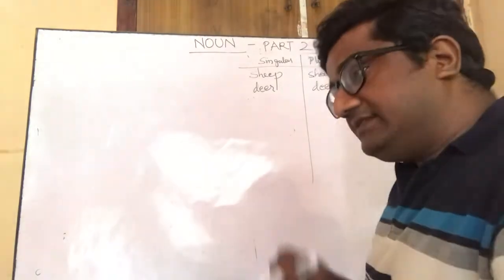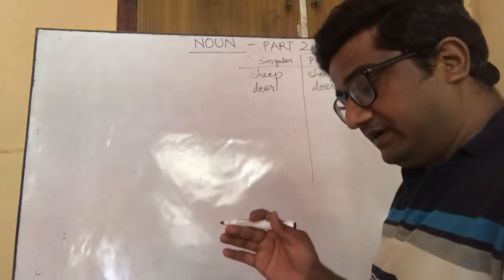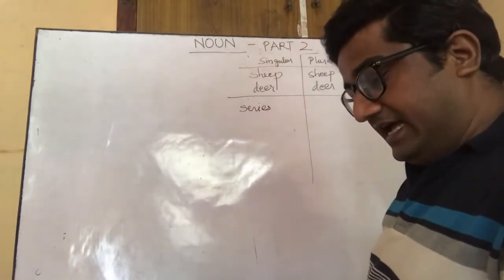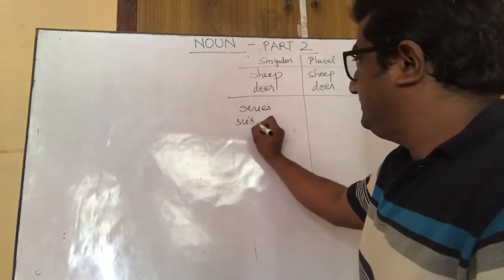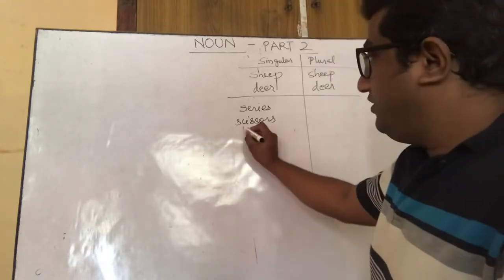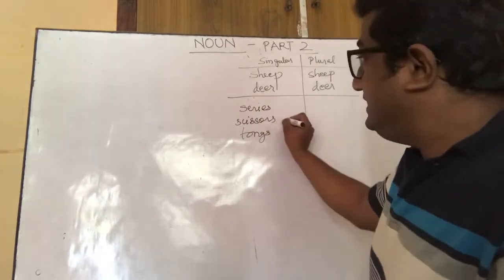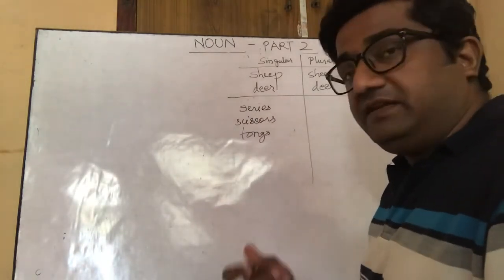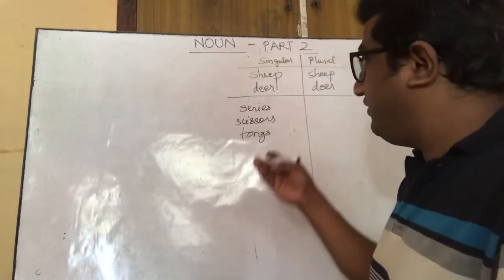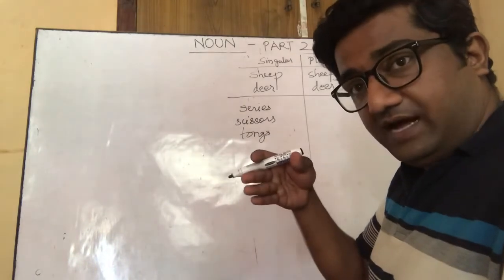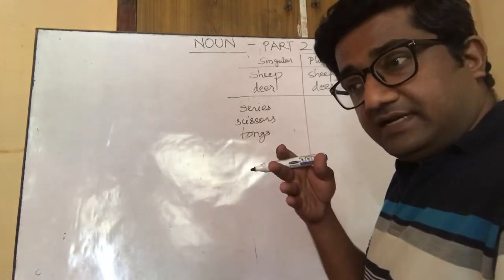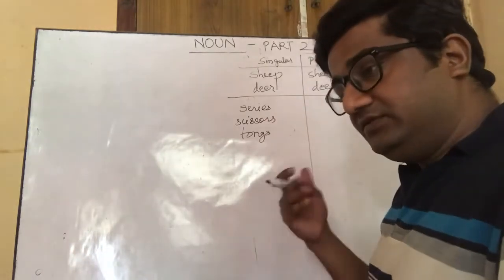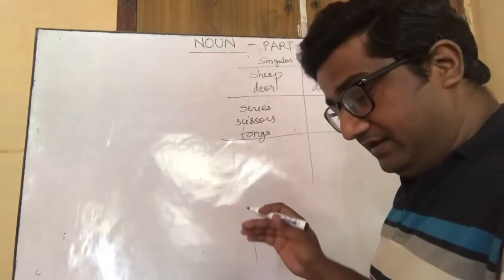Then there are nouns which only exist in plural form — they do not have a singular form. Examples include series, scissors, and tongs ('chimta' in Hindi). These always remain in plural form because they typically exist in pairs: there is a pair of tongs, two cutting sides of a scissors. So scissors and tongs are always used in plural form.